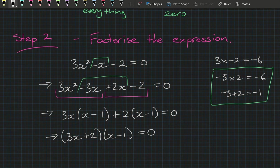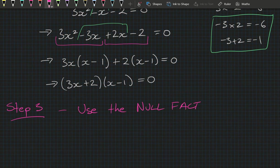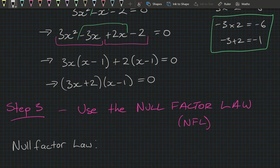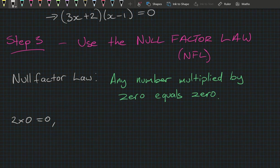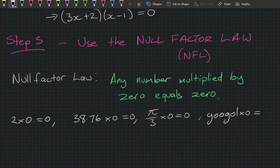Step 3 is using what's called the null factor law — from now on I'll call it NFL, and no, that's not American football. The null factor law simply states that any number multiplied by 0 equals 0. For example: 2 times 0 equals 0; 38.76 times 0 equals 0; pi divided by 3 times 0 equals 0; a googol times 0 also equals 0. Another way to state this rule: if a times b equals 0, then a must equal 0 or b must equal 0.